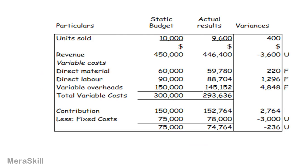We can break up the variance at each item level. Sales shows an unfavorable variance because we sold 400 units less. But the costs are all showing favorable — why? Because we are talking about costs for 9,600 units, not 10,000 units. Adding up the differences gives a favorable contribution of 2,764. But adjusting the fixed costs from 75,000 to 78,000 — a difference of 3,000 — gives 236 unfavorable overall.